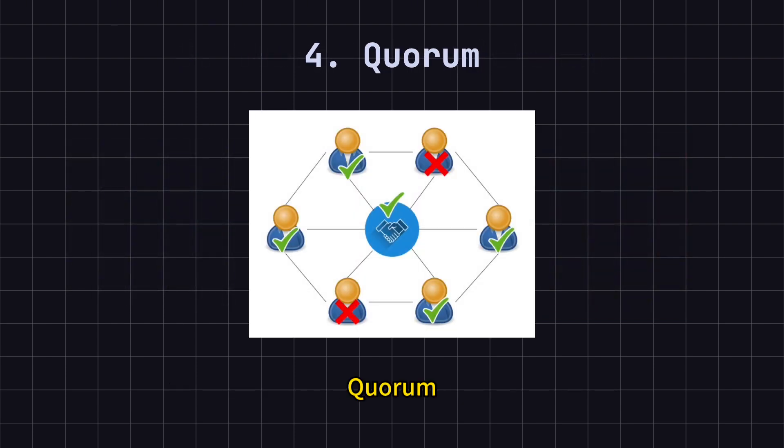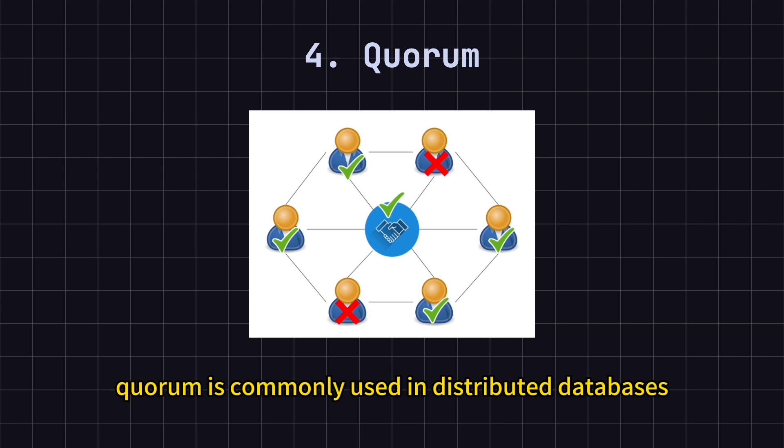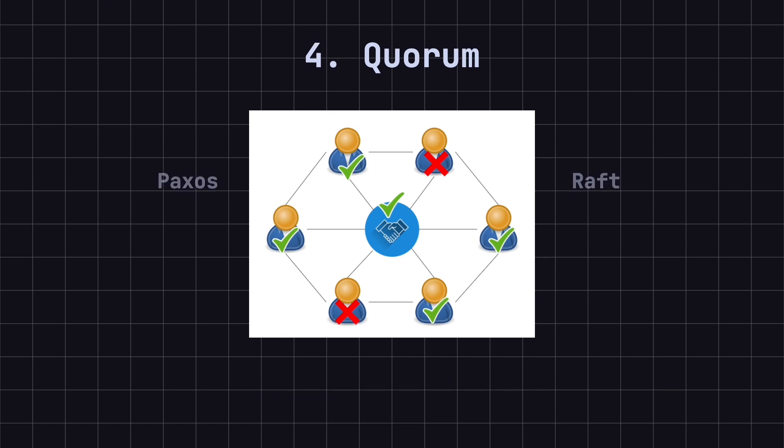Fourth, Quorum. Quorum is a method of achieving consistency in a distributed system. It requires a majority, usually n divided by 2 plus 1, of nodes to confirm an operation, read or write, before it's considered successful. This mechanism helps maintain a balance between consistency and availability. In a network partition, the Quorum mechanism ensures that even if some nodes fail or are inaccessible, the system can still reach a consensus and continue processing requests. Quorum is commonly used in distributed databases and distributed lock systems to strike a balance between consistency and availability. Famous distributed consensus protocols like Paxos and Raft support Quorum.